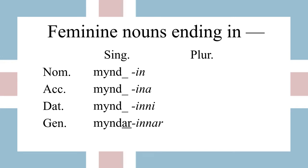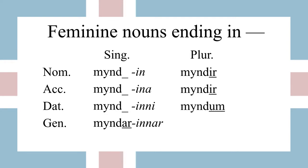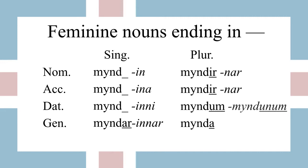Now for plural, we have a new ending. We have myndir, accusative myndir, dative myndum, and genitive mynda. And then with the definite article endings, we have myndirnar, myndirnar, myndunum, and myndanna.